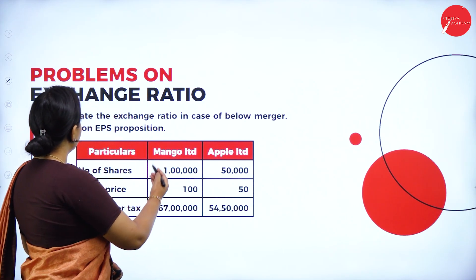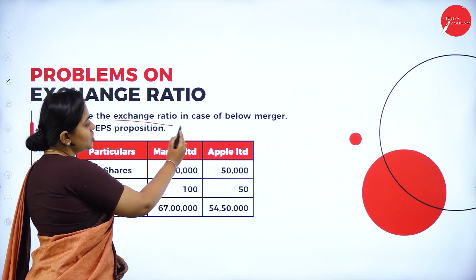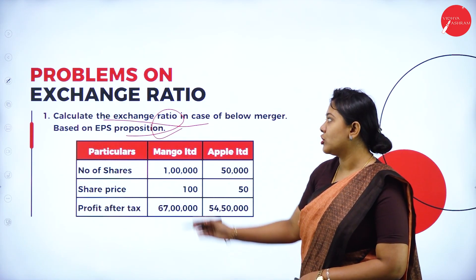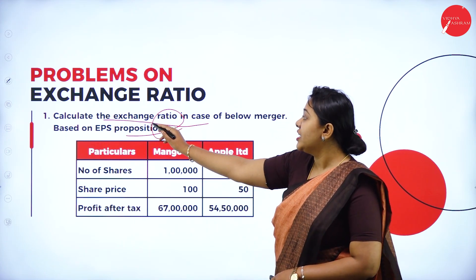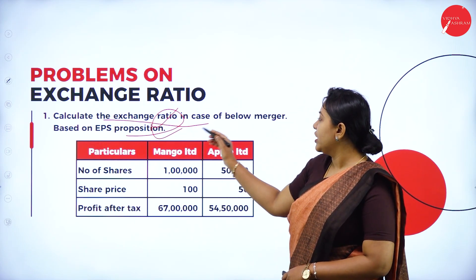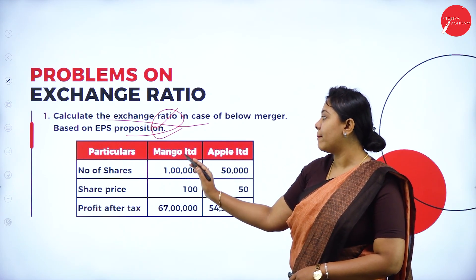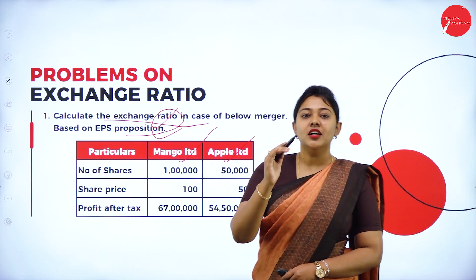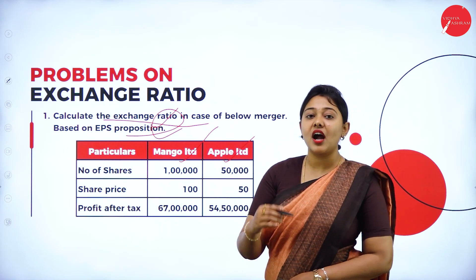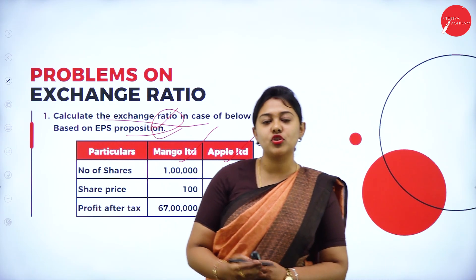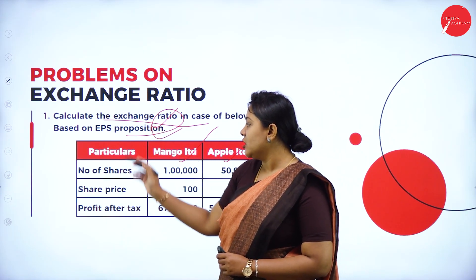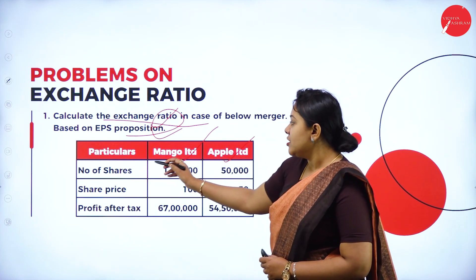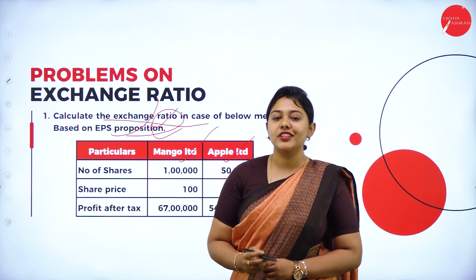Calculate the exchange ratio in case of the below merger based on EPS proportion. We need to calculate the exchange ratio in case of the below merger. The merger has happened between Mango Limited and Apple Limited. Mango Limited is the acquirer company and Apple Limited is the target company. We need to calculate the exchange ratio based on EPS proportion, which is not given in the question — we need to calculate it.